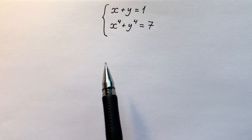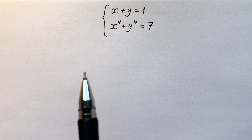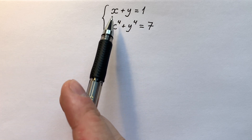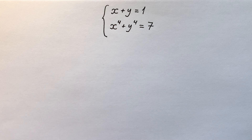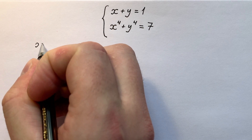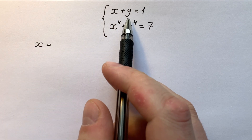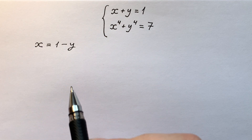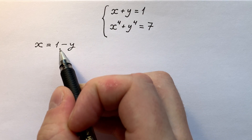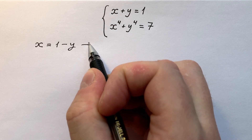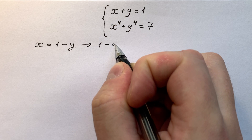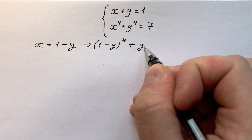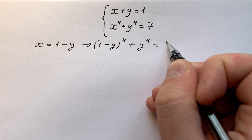Here is one of the most crazy systems of equations I've ever seen. Let's try the first approach: express x from the first equation and substitute it into the second. From the first equation, x equals 1 minus y. Substituting into the second equation gives us (1 minus y) to the power of 4, plus y to the power of 4, and it equals 7.